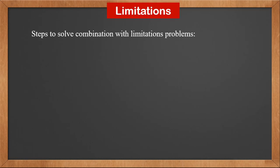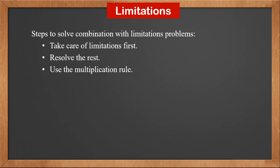Steps to solve combination with limitations problems are: take care of limitations first, resolve the rest, and use the multiplication rule to combine them together.